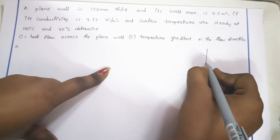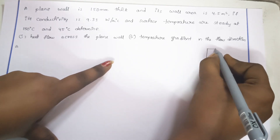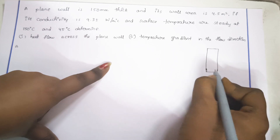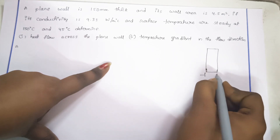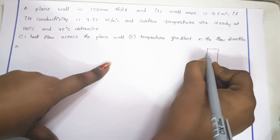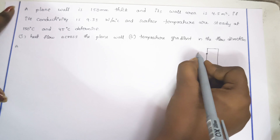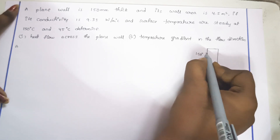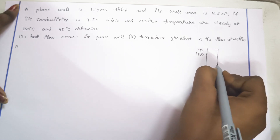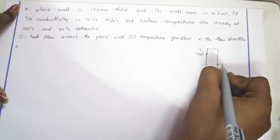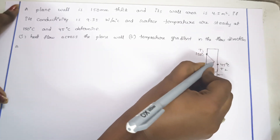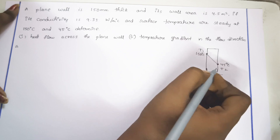We will get directly from the formula by substitution. This is a plane wall. The thickness of the wall is 150 mm. The outside wall temperature is 150 degrees centigrade — this is T1. The inner side temperature is 45 degrees centigrade — this is T2. The temperature profile is linear.